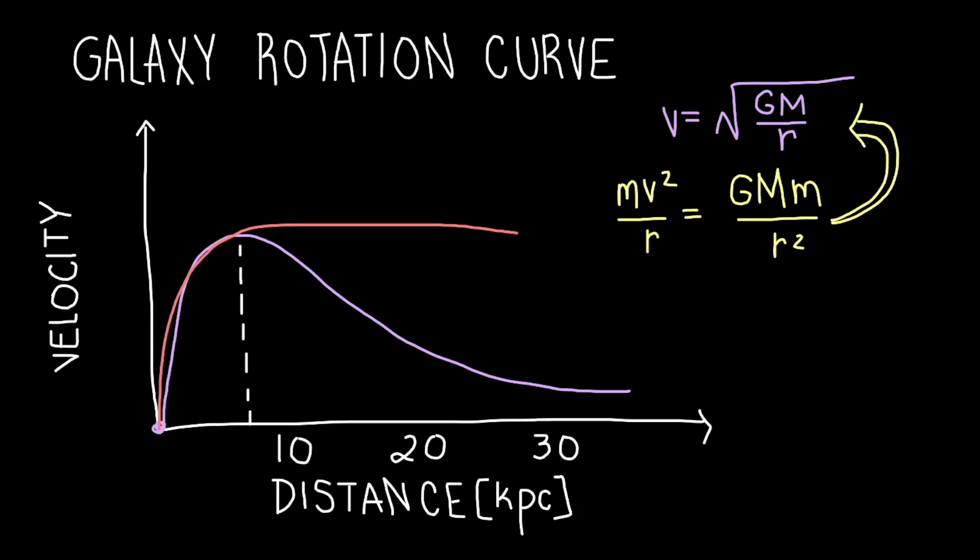Hello, welcome to Astronaut. Today we're talking briefly about galaxy rotation curves, a graph that indicates the existence of dark matter.